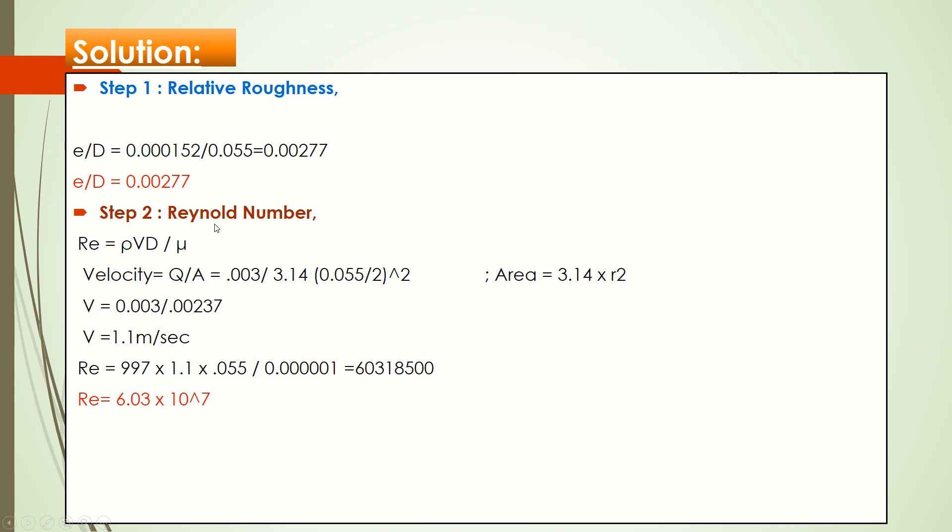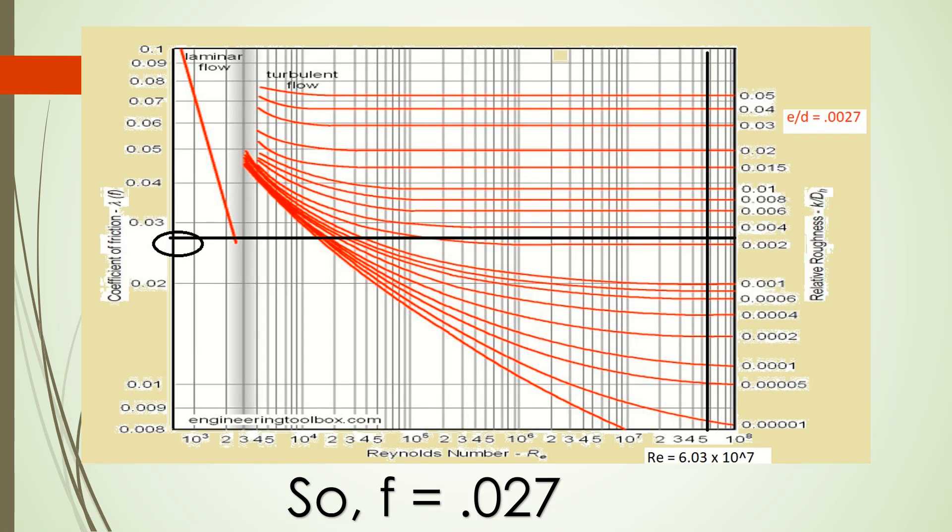Now you are able to use the Moody chart. Guys, this is the Moody chart. With the Moody chart, you can easily calculate friction factor if you have Reynolds number and relative roughness. Now we have calculated both values: our relative roughness is 0.0027, our Reynolds number is 6.03 × 10^7.